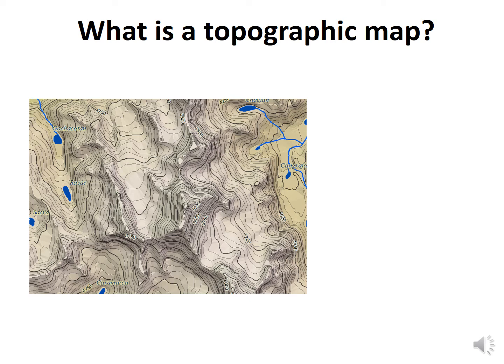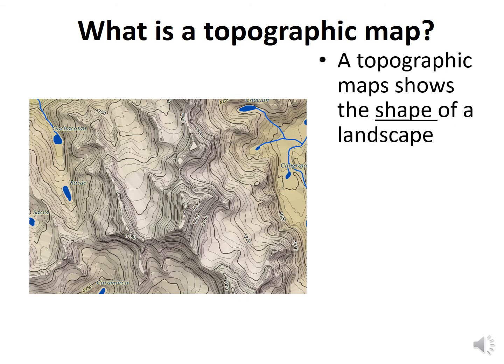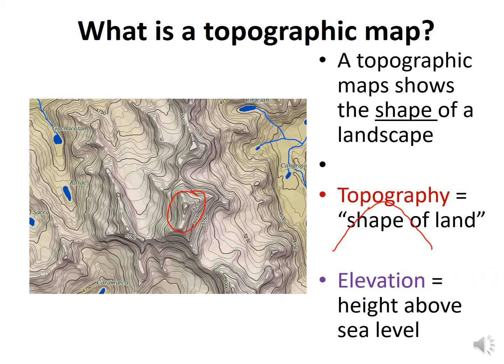So what is a topographic map? You have to know how to read these. A topographic map shows the shape of the landscape. We're going to learn what it means when contour lines are very tight versus spread out. Obviously, when lines are very tight it's a small, steep area, and as they spread out more evenly, that represents a mountain shape. Topography is the shape of land; elevation is the height above sea level.